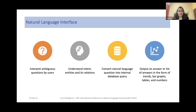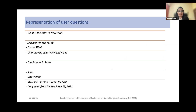The input to this natural language interface is a question by a user in natural language. This is processed and analyzed, and finally the results are written in the form of insights. The system is capable of answering a variety of questions. For example, it can be a data retrieval type of question — a direct question involving a metric or an entity, like 'What is the sales in New York?'